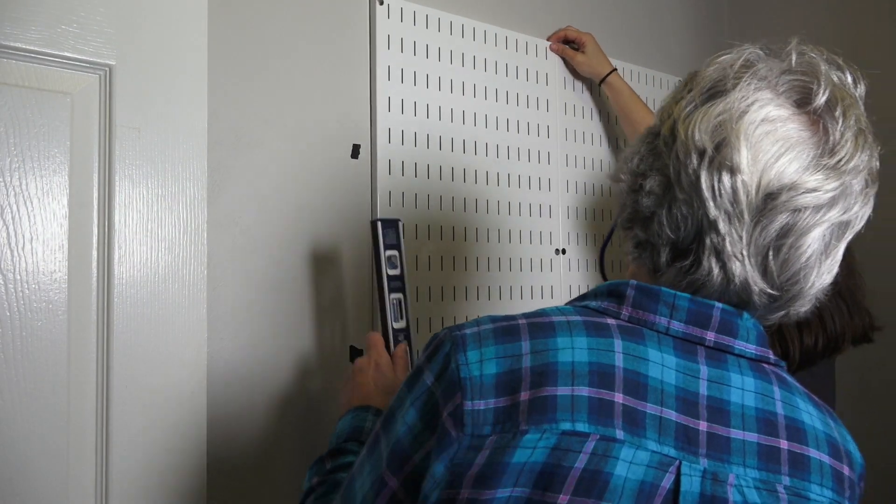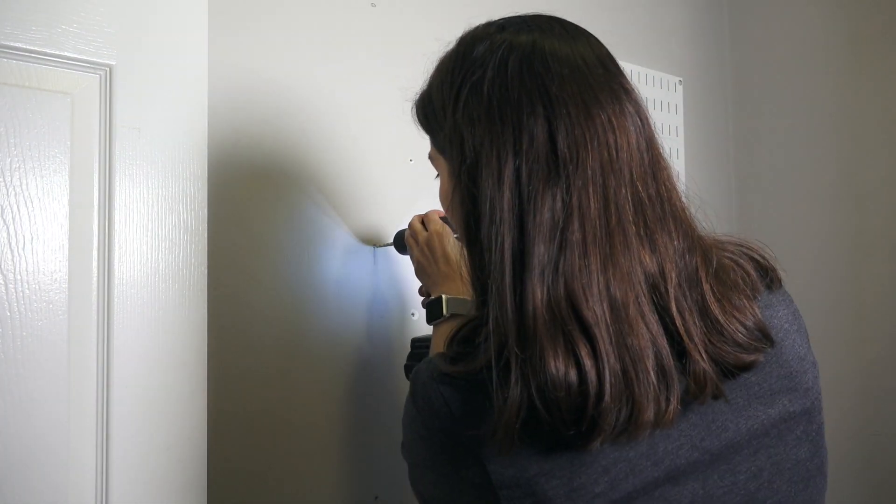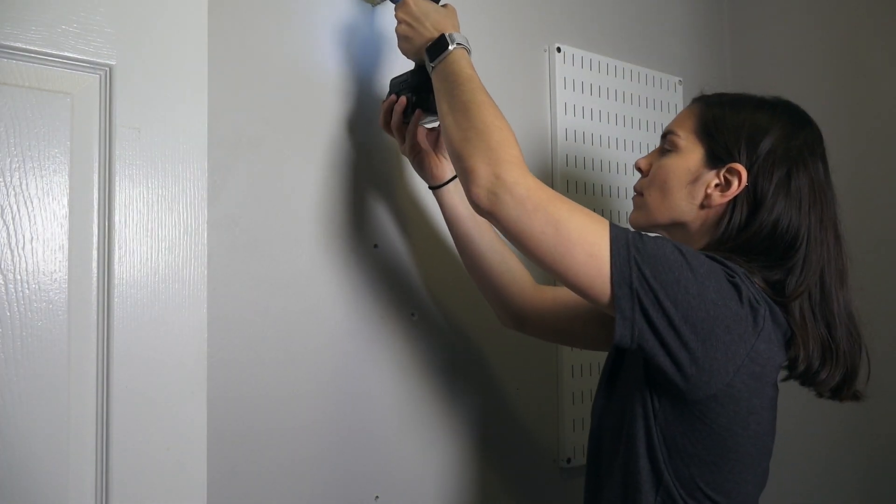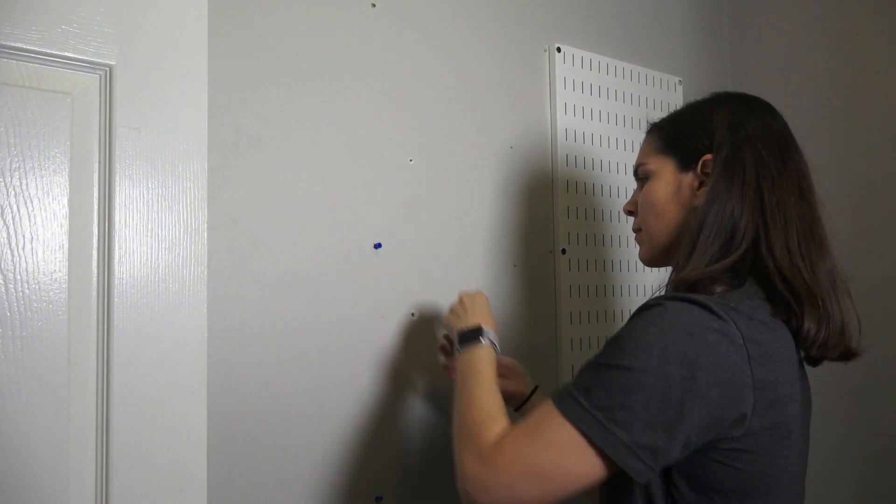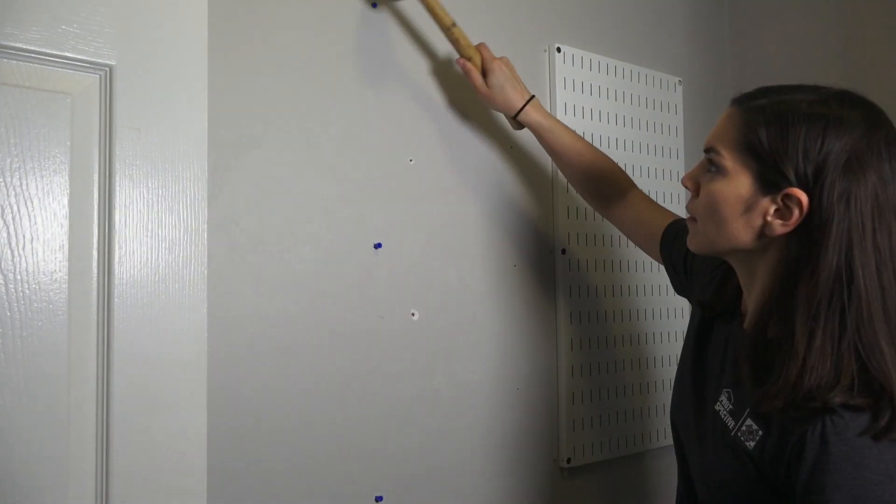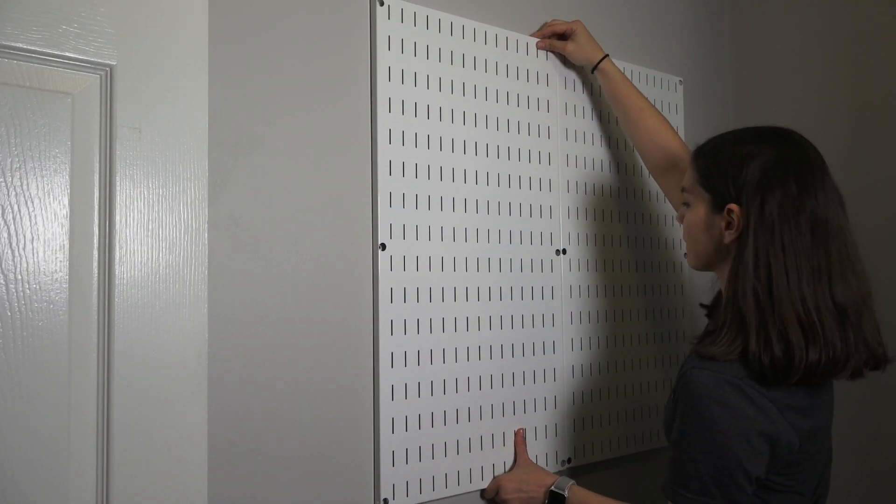We decided to put the two larger panels next to each other in our configuration. That's what's great about the system is it can be customized to your space. Again, we used a 1/4 inch drill bit to drill into the drywall and used drywall anchors to secure the panels into place. It's recommended to attach all the screws loosely at first and then tighten once everything is nice and straight.